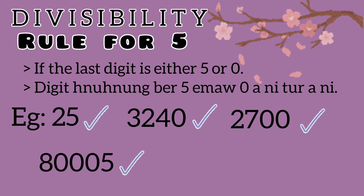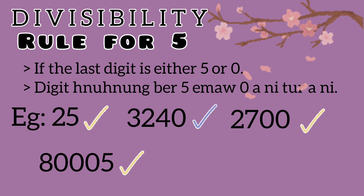Another example: 80007. The last digit is 7. 7 is not 0 or 5, so 80007 is not divisible by 5.